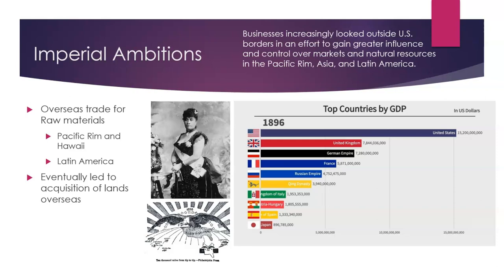The U.S. first ousted the monarchy in Hawaii because Queen Liliuokalani wanted to reduce the influence of foreigners in the Hawaiian government, and tariffs on imported sugar affected the price of goods coming from Hawaii, even if the companies producing them were American. We will focus more on this in the next era, but know that industry leaders were essentially part of the motivation for the U.S. building that overseas empire in the first place.